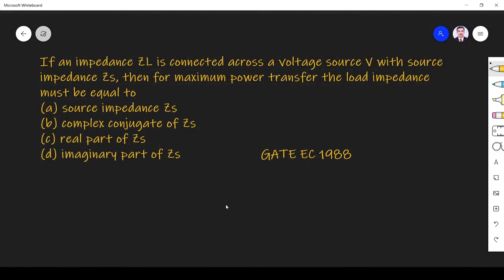So what they have given here: they have connected a load impedance across voltage source V, so voltage source V is here with impedance ZS. Across this, a load impedance is connected.